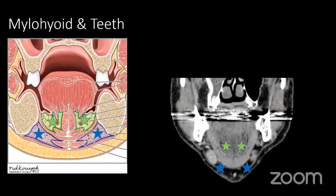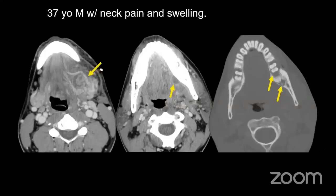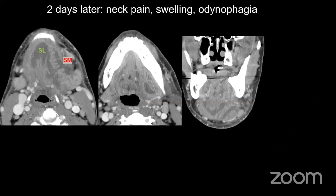This is the same patient shown a moment ago. He was sent home with antibiotics and given a dentist appointment, but came back two days later with a bad spread of infection. Applying our algorithm and looking at the complications: there is now spread of infection from the submandibular space to the sublingual space. On the coronal view you can see the mylohyoid sling, with the sublingual space above and submandibular space below, and abscess or pus collection in the floor of the mouth.